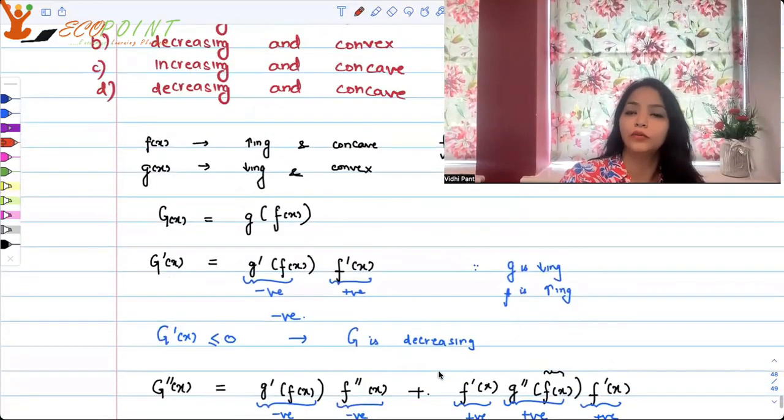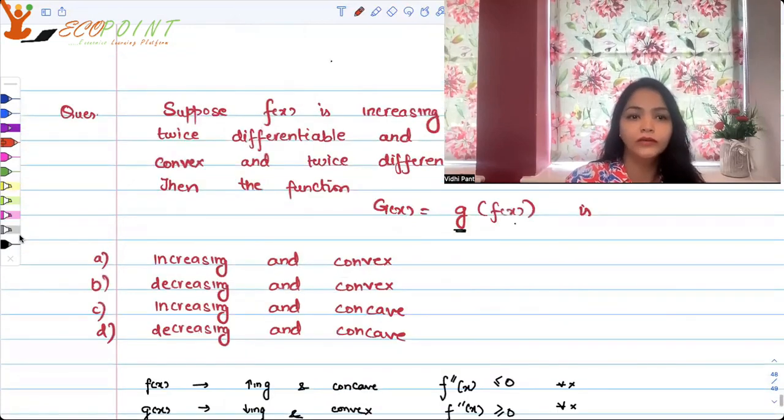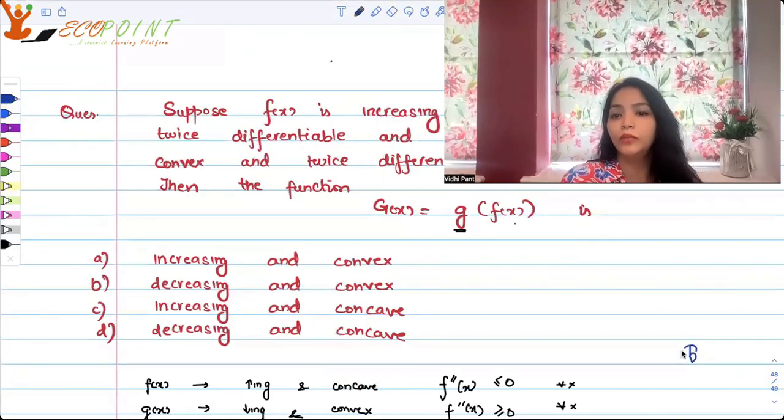So do we have an option telling us the same thing, decreasing and convex? Yes, so B should be the correct answer.